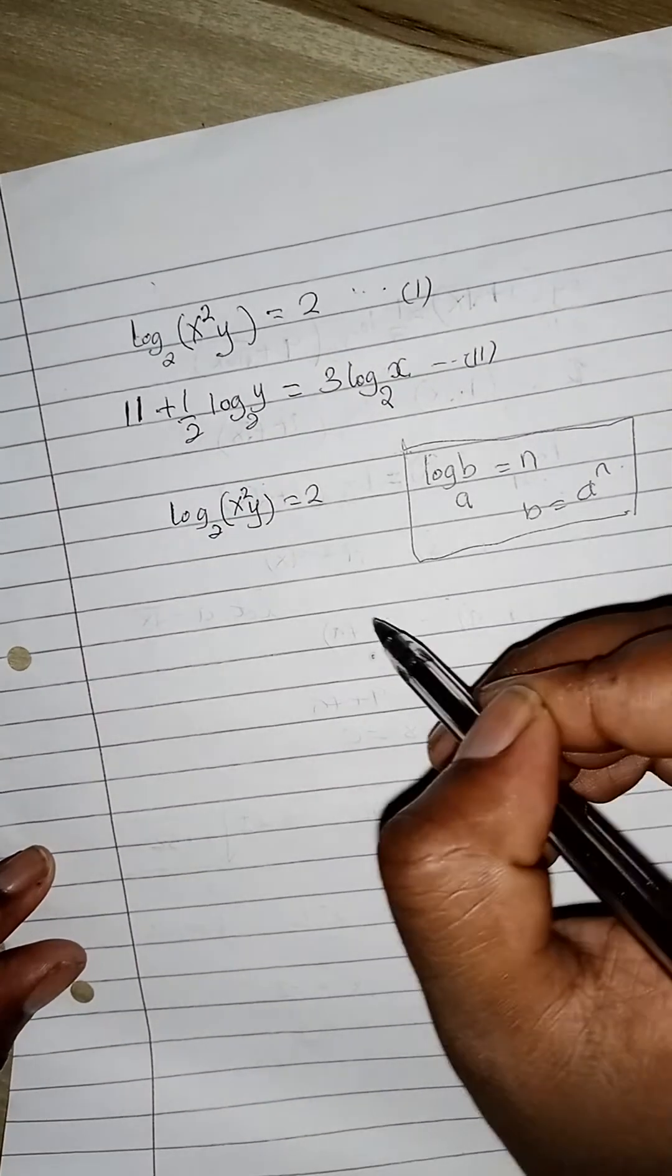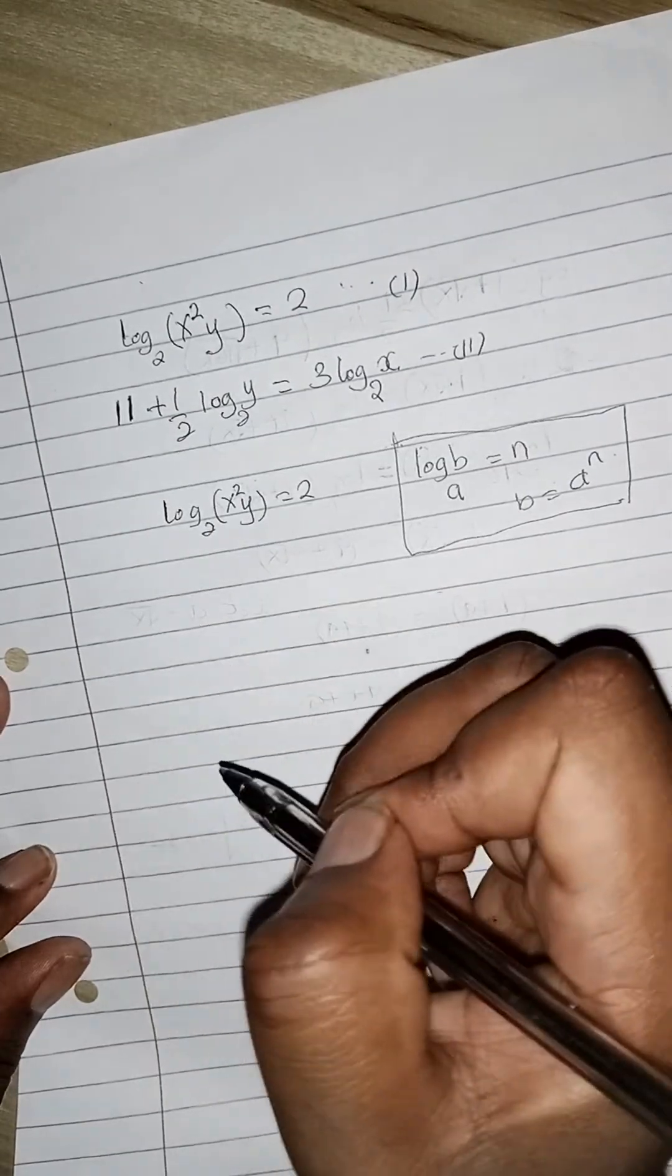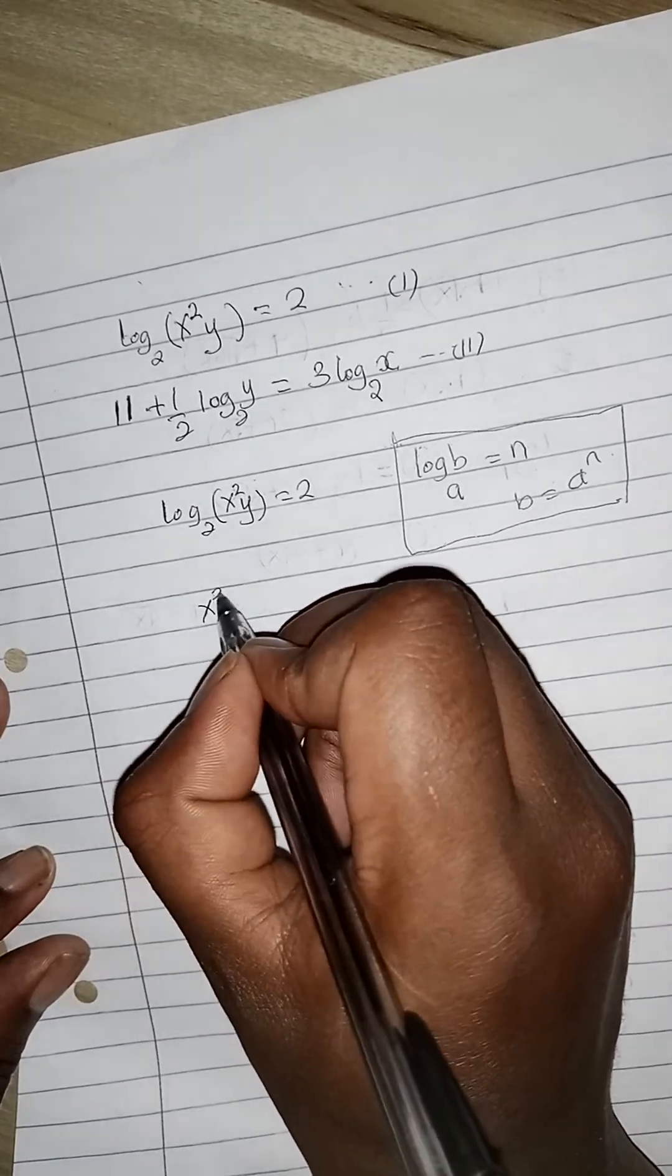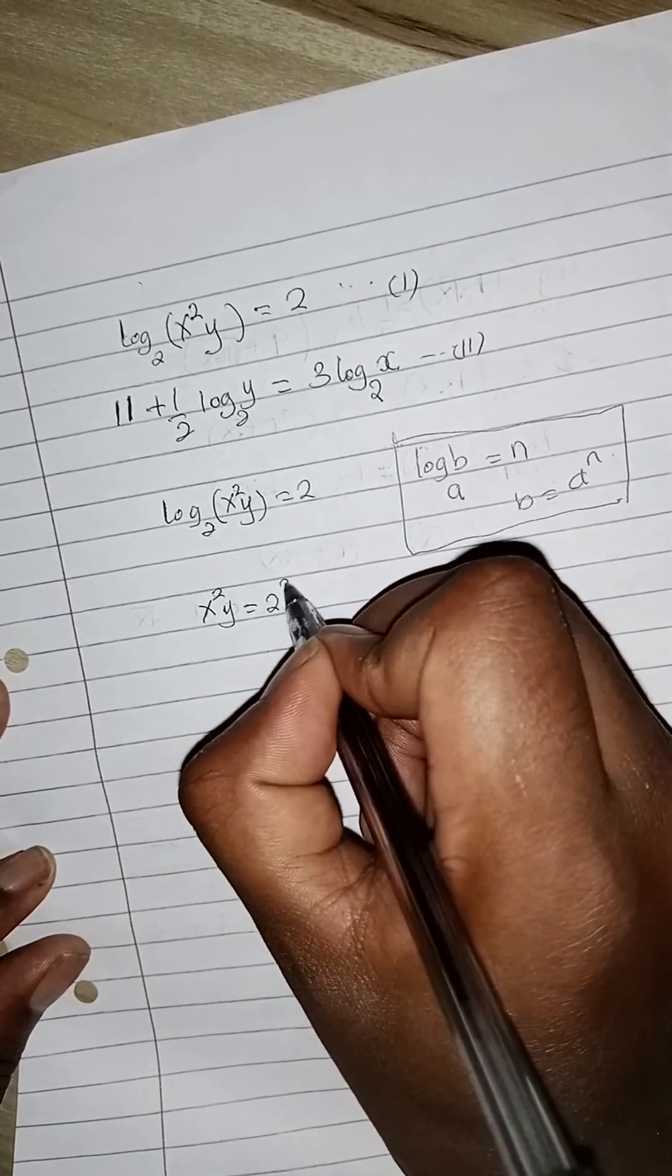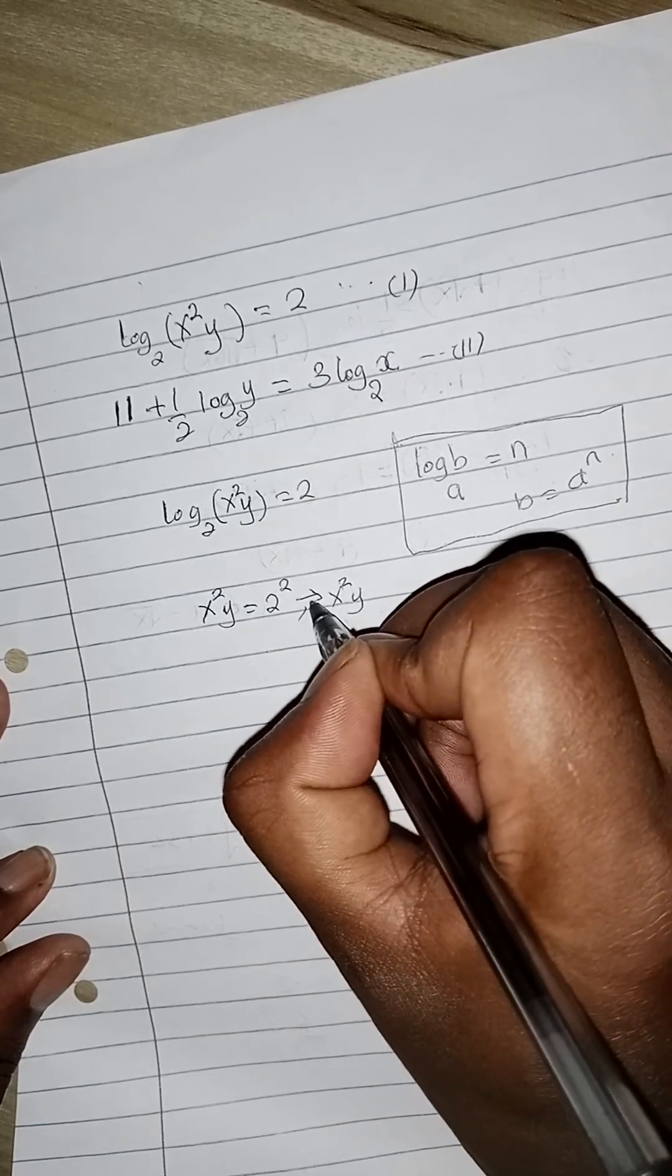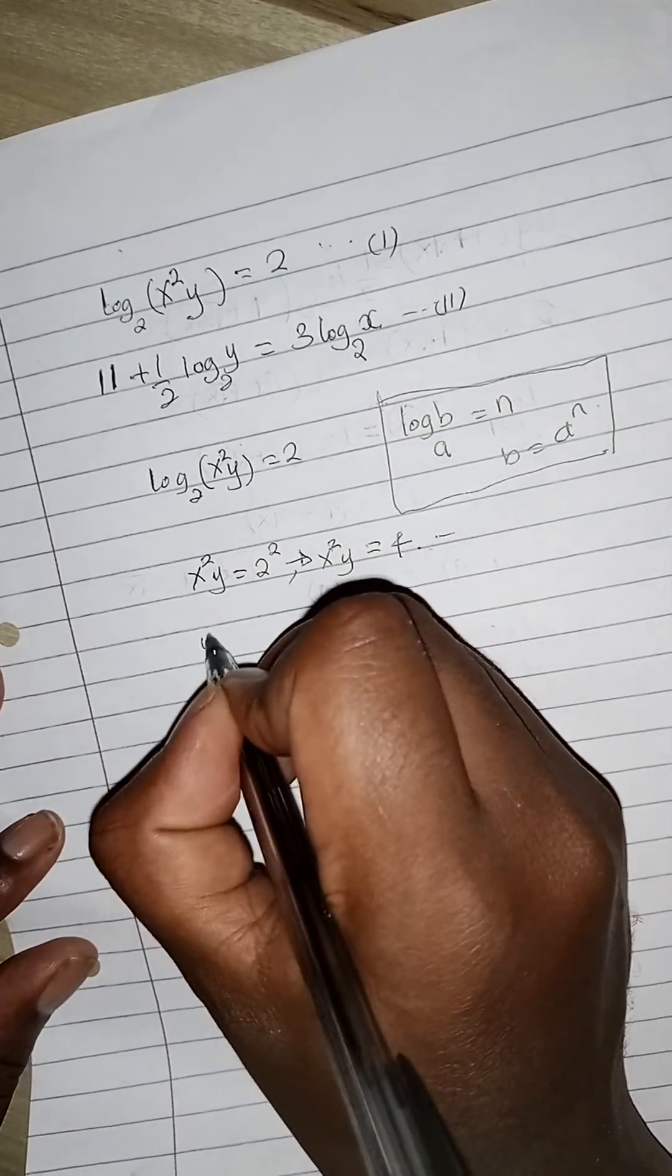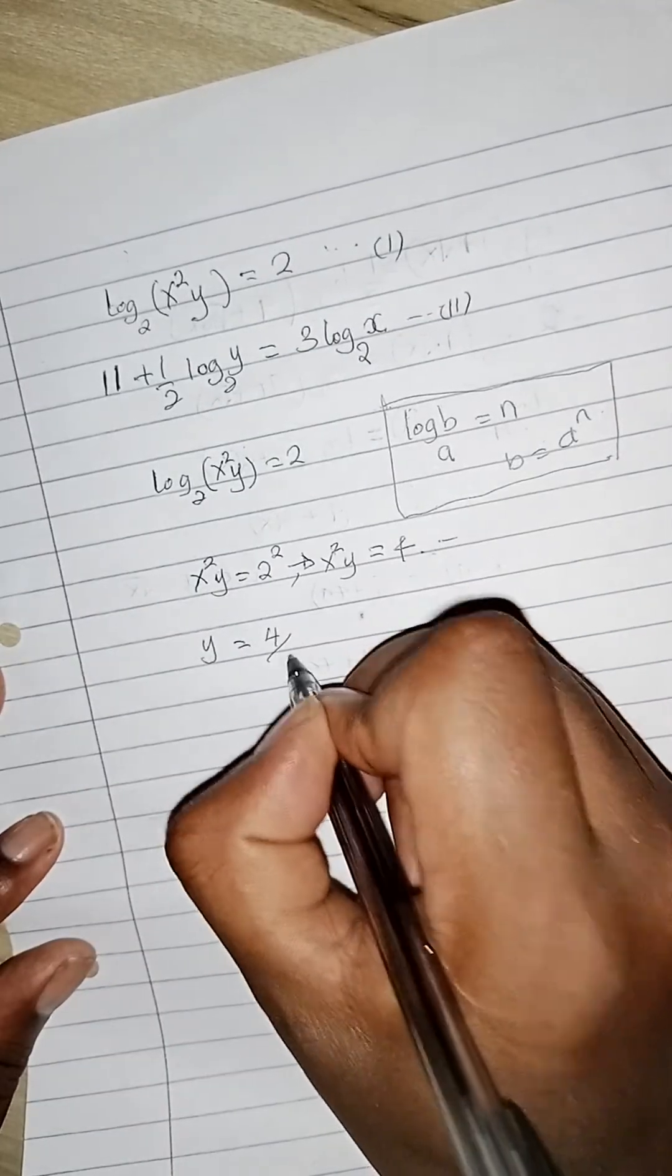We can say x squared y is the same as 2 raised to 2, which is x squared y equals 4. We leave it at that. So we can say y is 4 over x squared.